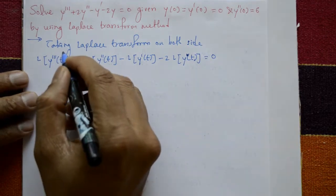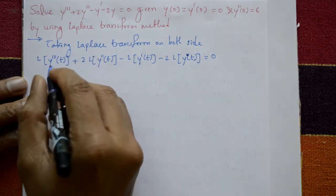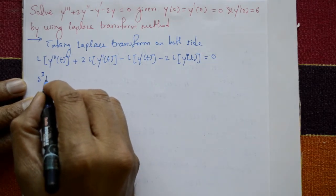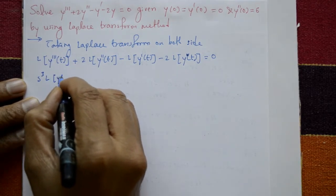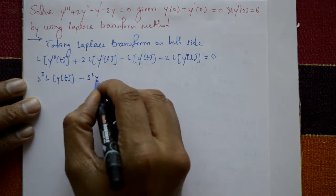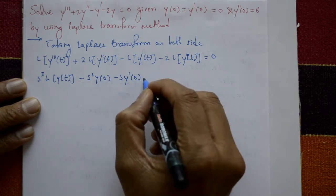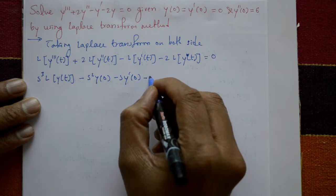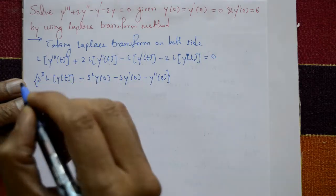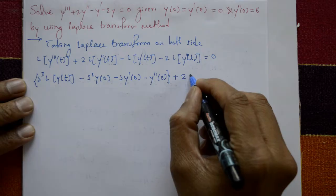The first term: L{y'''(t)} = s³·L{y(t)} - s²·y(0) - s·y'(0) - y''(0).